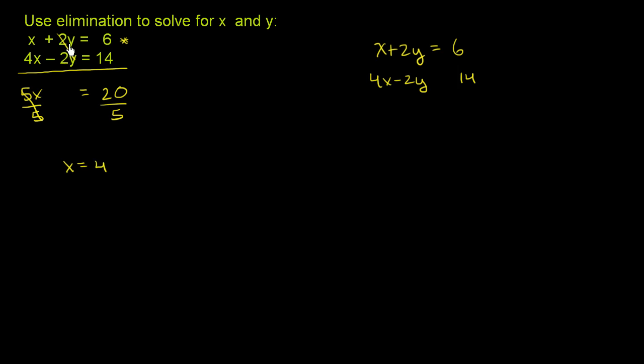Now we can go back and substitute in x equals 4 into either of these equations to solve for y. So let's use this top one. So we have 4 plus 2y is equal to 6. We can subtract 4 from both sides. So then we get 2y is equal to 2. Divide both sides by 2.